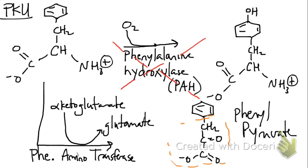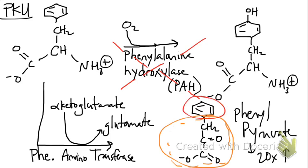If PKU is undiagnosed, phenylpyruvate would be about 20 times increased compared to normal levels in the blood. So why is phenylpyruvate so bad? Pyruvate dehydrogenase complex sees phenylpyruvate and thinks it's pyruvate, trying to make acetyl-CoA. But the phenyl ring portion of phenylpyruvate gets into the pyruvate dehydrogenase complex and just mucks it up — it sticks there and can't work, thereby inhibiting the pyruvate dehydrogenase complex.